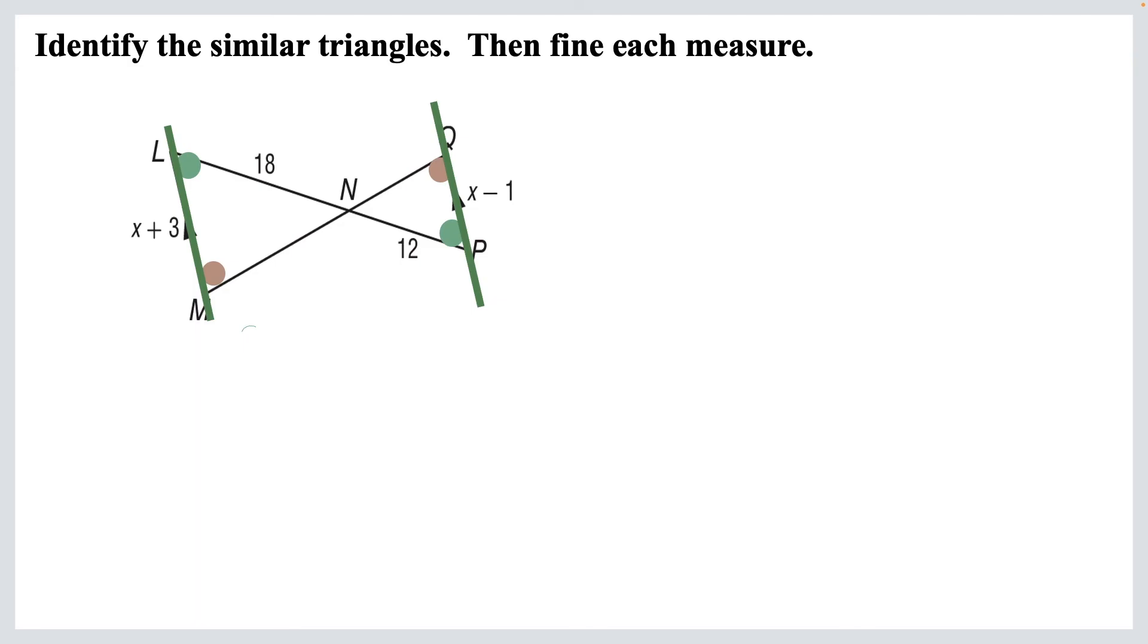So we have two pairs of congruent angles, which means we've got similar triangles. We've got the green one on the left here, purple one on the right. So we've got triangle MLN is similar to triangle QPN. And off we go. We've got an angle-angle similarity, and we can start solving things.